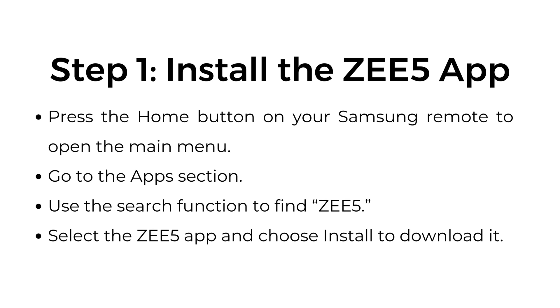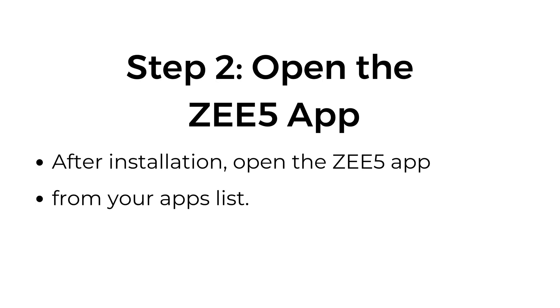Press the home button on your Samsung remote to open the main menu. Go to the apps section. Use the search function to find ZEE5. Select the ZEE5 app and choose install to download it.